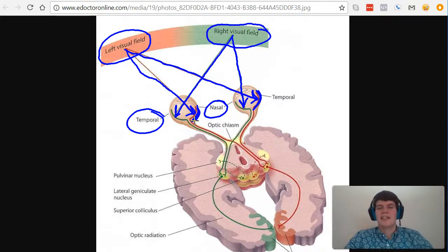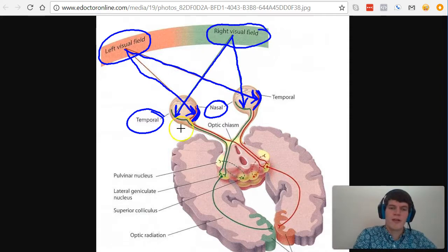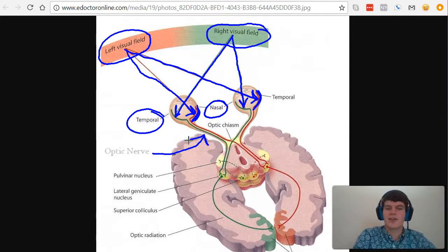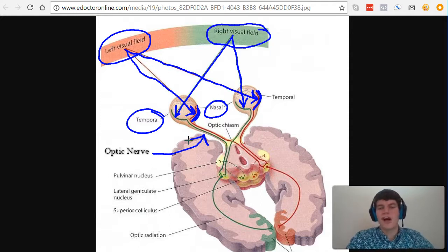This information is then taken in through this nerve right here, which we call the optic nerve. Then it goes to what's called the optic chiasm, which is where the visual fields cross.